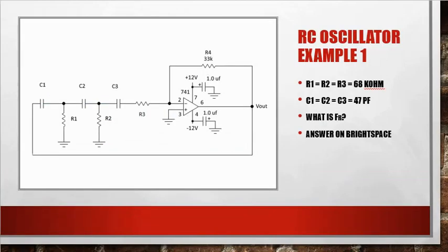RC oscillator example number one. The resistors R1, R2, R3 are equal to 68k ohm. C1 is equal to C2 equals C3 is 47 picofarad. What is the frequency of resonance? You can calculate that out. The answer is on a separate file on Brightspace.